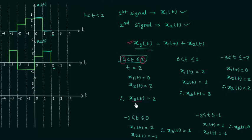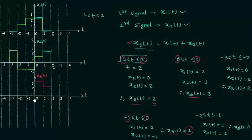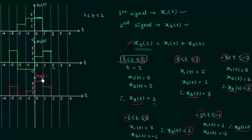From 1 to 2, x3(t) is equal to 2. This is the waveform of signal x3(t). From 0 to 1, x3(t) is equal to 3. From minus 1 to 0, x3(t) is equal to 1. From minus 2 to minus 1, the signal is equal to 0. And from minus 3 to minus 2, signal x3(t) is equal to 2. This is the complete waveform for signal x3(t), and this is what you get when you add signal x1(t) with signal x2(t).